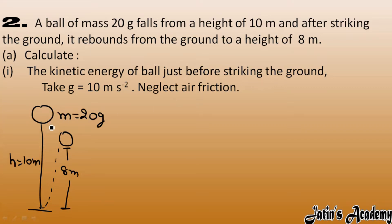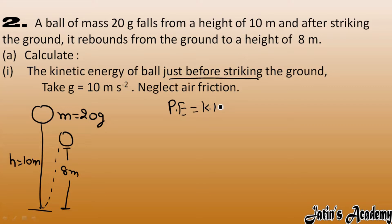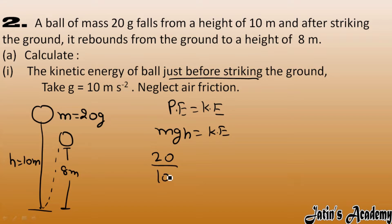Just before striking the ground, the whole potential energy is converted into kinetic energy. Potential energy is mgh. Mass is 20 gram, which we convert to kilogram by dividing by 1000. g value is 10 and h is 10 meter — the initial height before striking the ground.